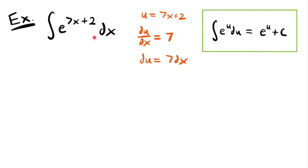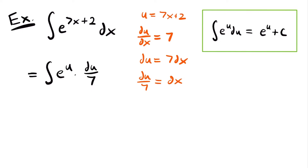When you use u substitution, whatever du is equal to, you want to try and see if that can be found in your integral. I don't see a constant multiple of 7 in this integral, but I do see dx. So I'm going to divide both sides by 7, giving us du divided by 7 is equal to dx. Now we can replace dx with du divided by 7 and rewrite the integral in terms of u. This gives us the integral of e to the power of u times du divided by 7, which we can rewrite as 1 seventh times the integral of e to the power of u du.